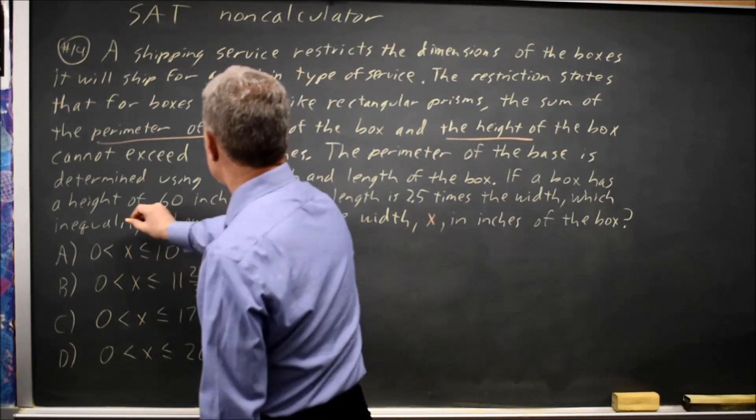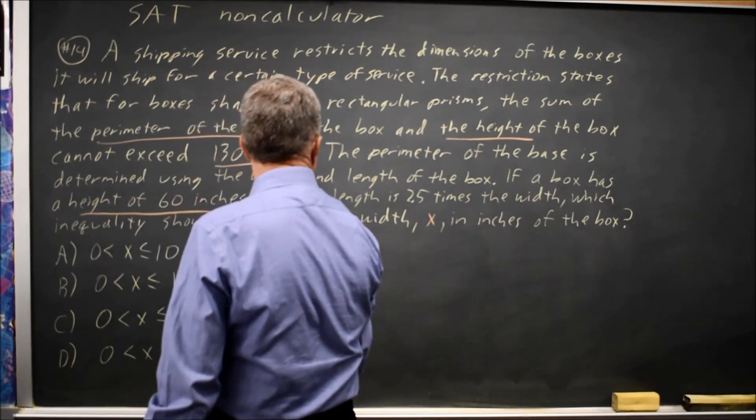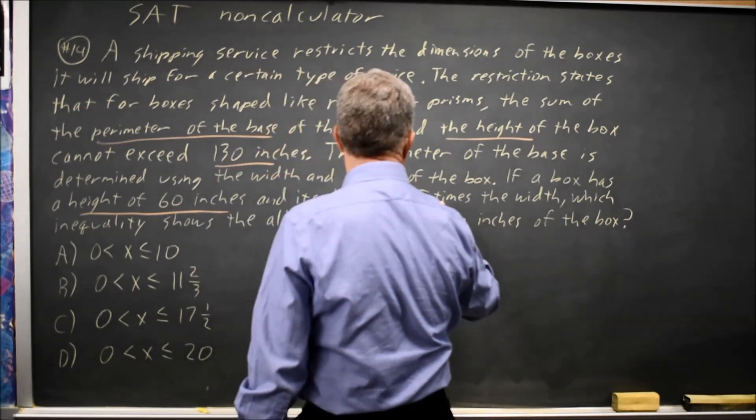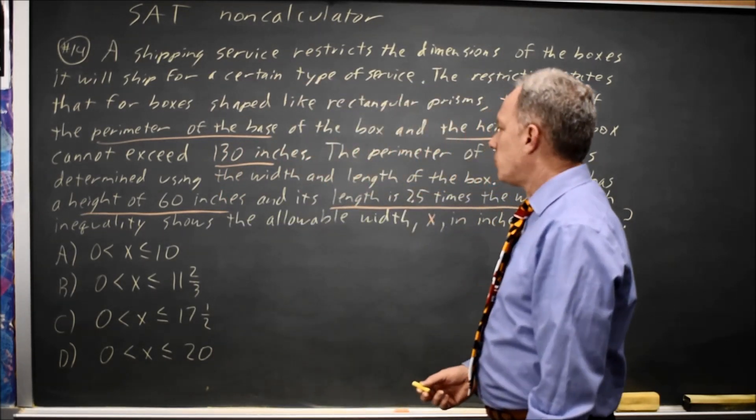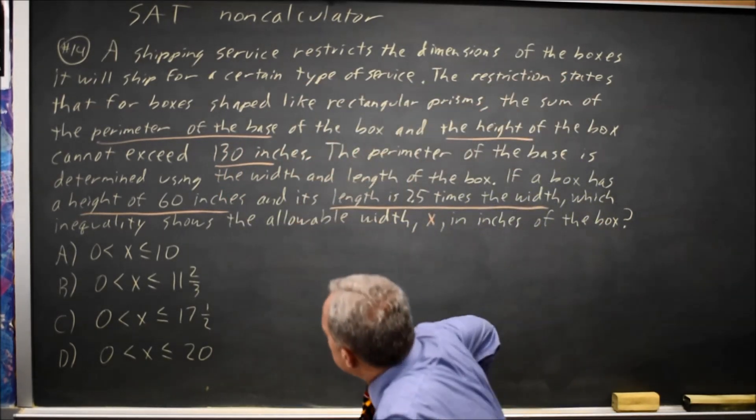We're told that the height is 60 and the length is 2.5 times the width. And they want an inequality for the allowable width. So drawing this box...